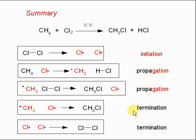And then two termination steps. One: CH3 with Cl• giving one of the desired products. Or you could have two chlorine radicals bumping into each other to form a chlorine molecule.